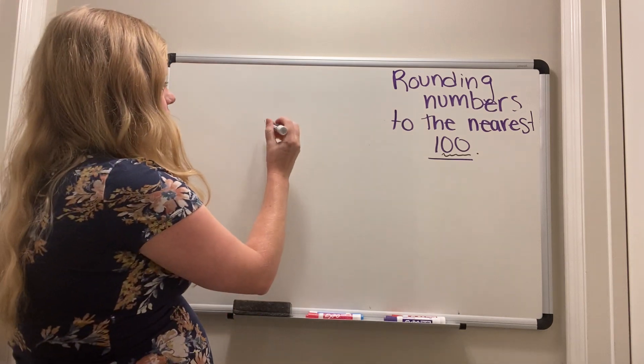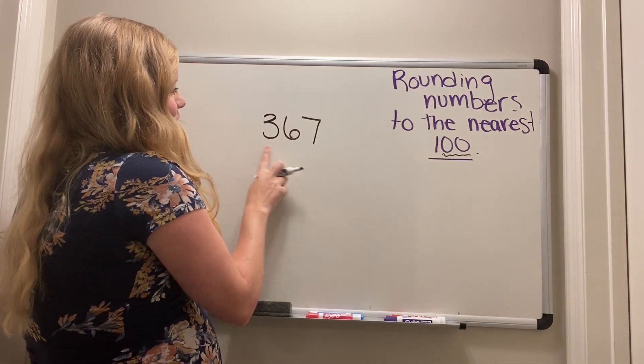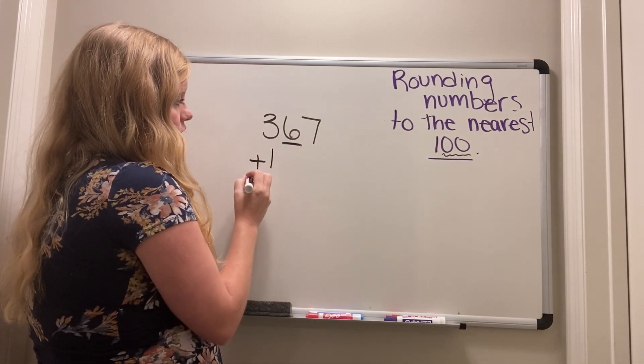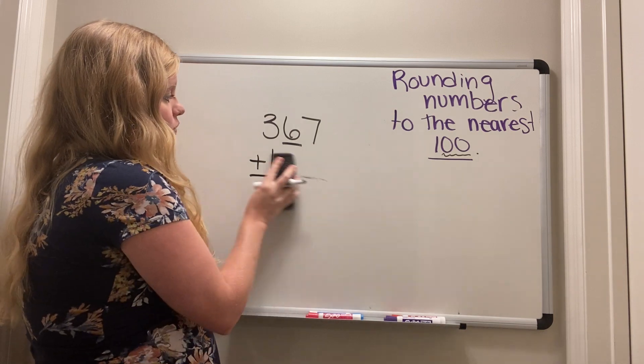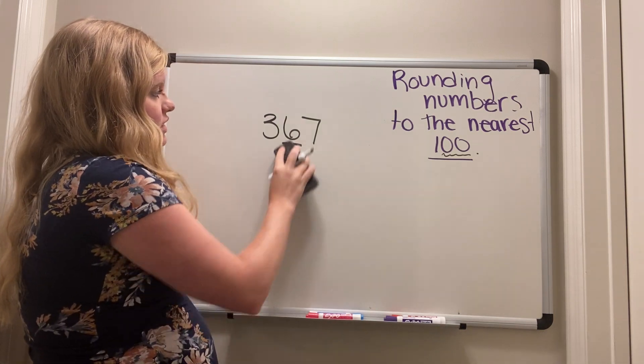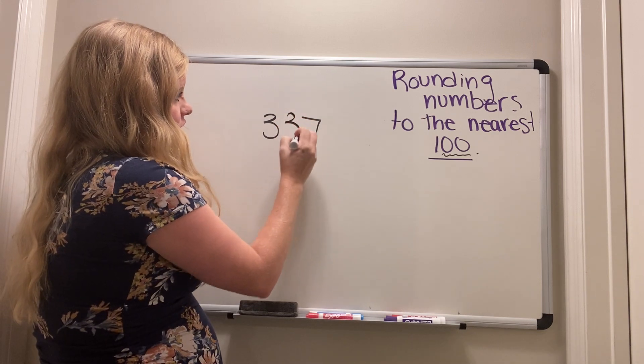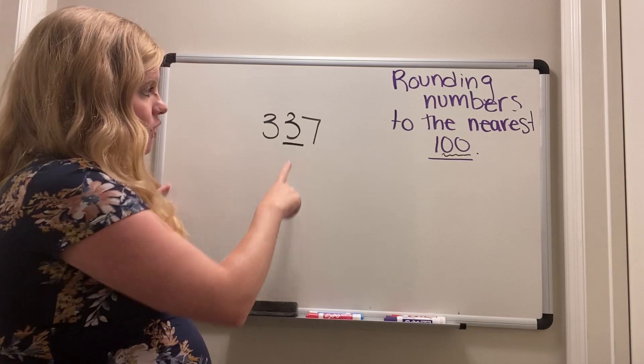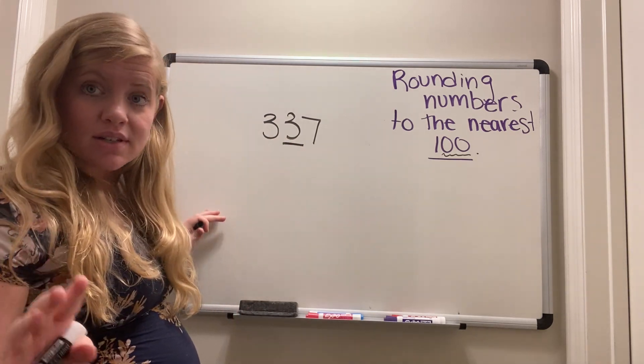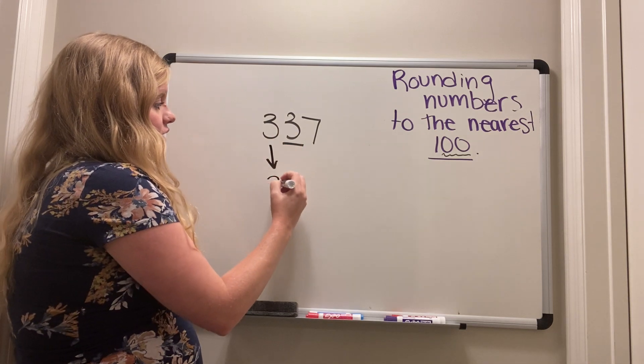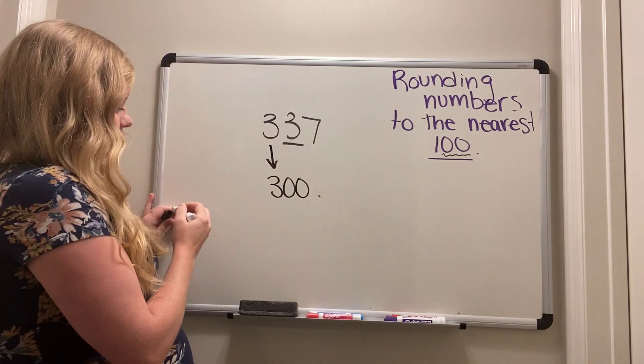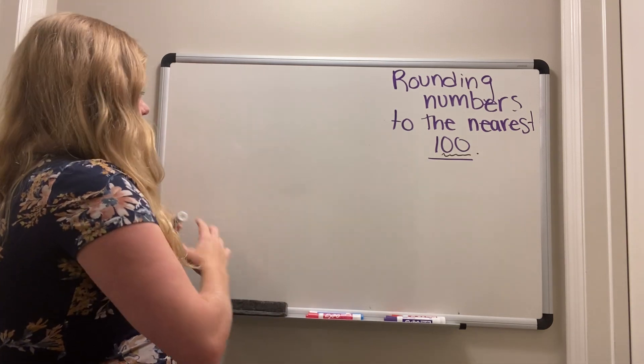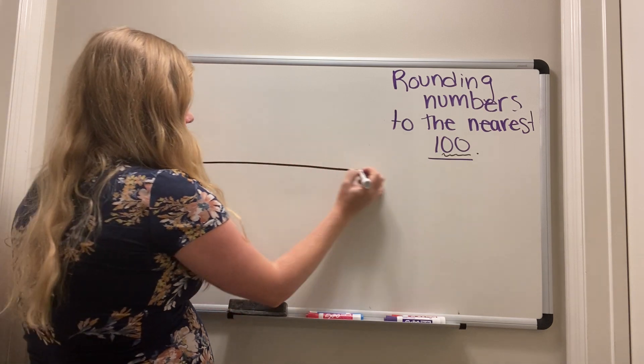I didn't even finish the poem. Let's try that one again. 300, look behind, underline, five or more, you add one more. So that's 400. If we had this number instead, look behind, underline, five or more, you add one more. Four or less, you let it rest. So that means that you don't add anything and it just becomes 300. Now let's get into number lines because I love them.